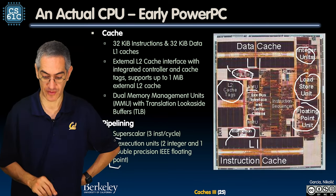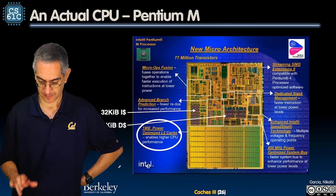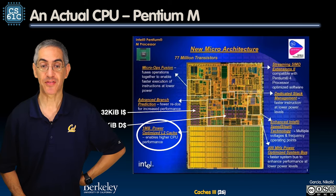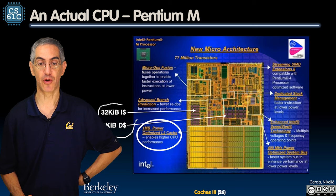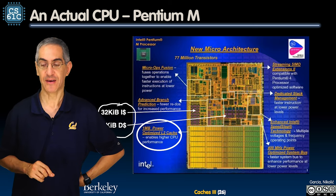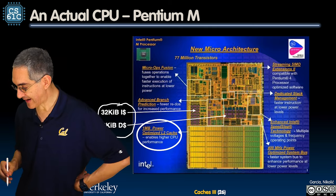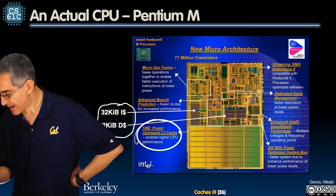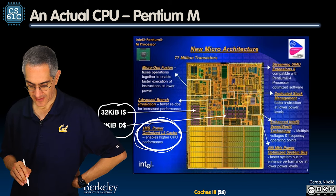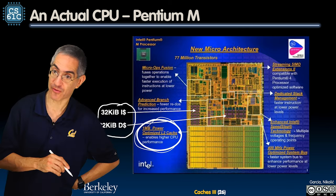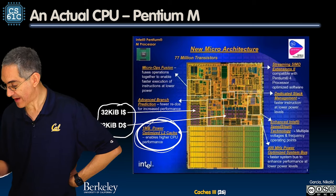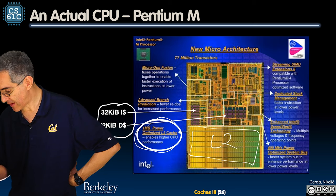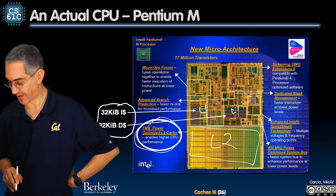This was a single-core machine — not multi-core. Now looking at the Pentium M, a completely different company: that was Motorola, this is Intel. Same kind of thing: 32 KiB of instruction and data L1 cache. But here's the difference — the L2 cache is on-chip. There are the L2 tags, and the L2 data itself is right there on the chip alongside the L1 caches.